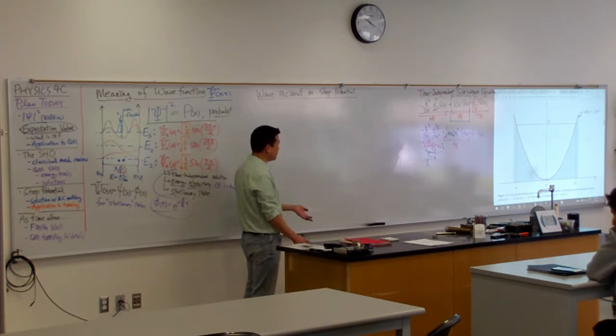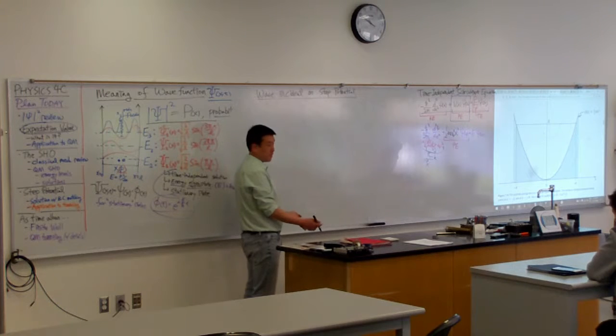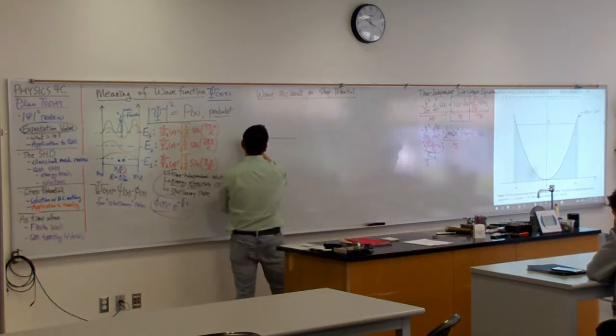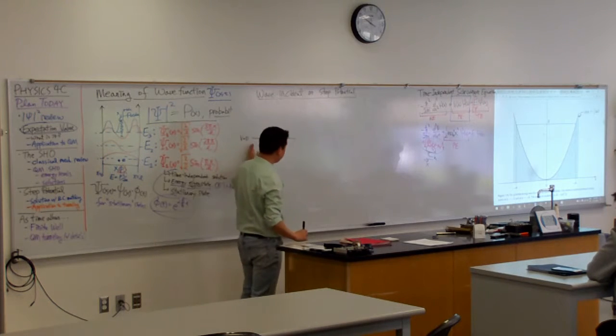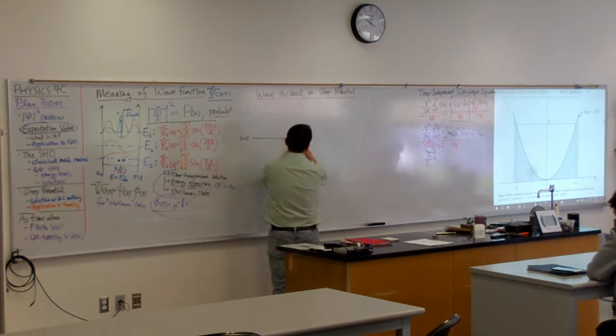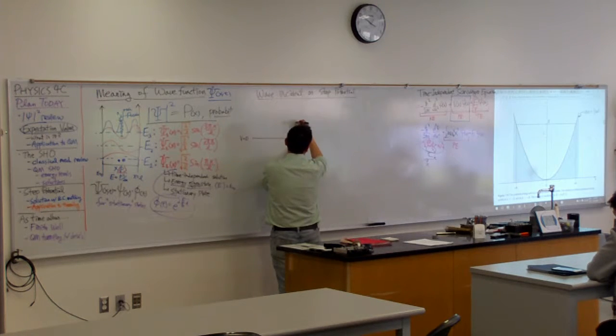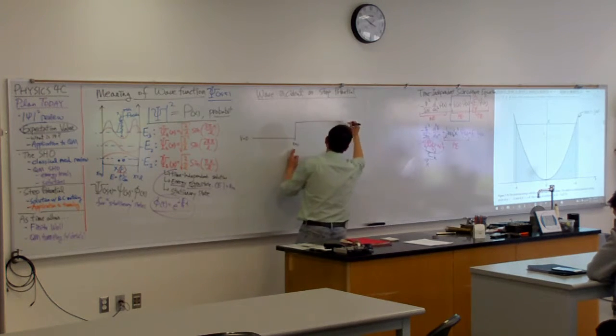So this is the very next level of complication we can add. We can have a potential that's zero most of the time, and then at some boundary, let me call that x equals zero, the potential suddenly jumps to some V₀.